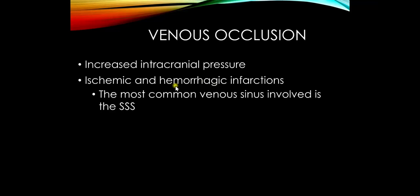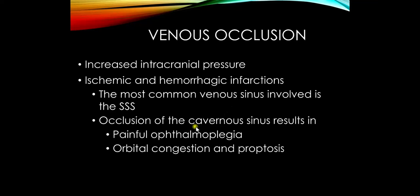The most common venous occlusion is the superior sagittal sinus thrombosis. The other relatively common one is occlusion of the cavernous sinus, which drains the eye and orbital contents. If we can't drain that adequately, the patient develops what's known as a painful ophthalmoplegia — the eye doesn't move well — along with swelling and orbital congestion.